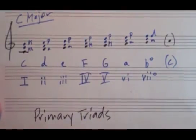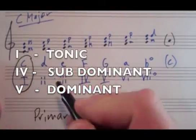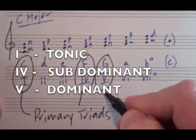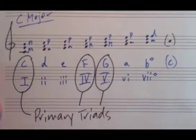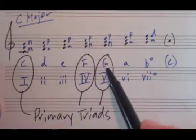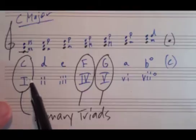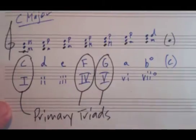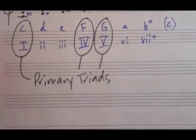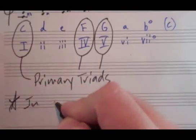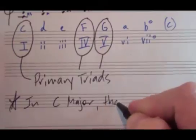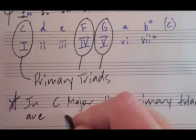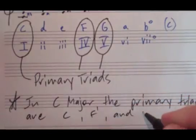And in any major key, the primary triads are the I, the IV, and the V. So of course, if we were in a different key, the chord name would be different, but we're always going to be talking about the triads that are built on the first degree of a major scale, the fourth degree of a major scale, and the fifth degree of a major scale. So in C major, the primary triads are C, F, and G.